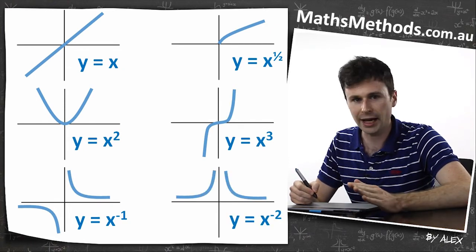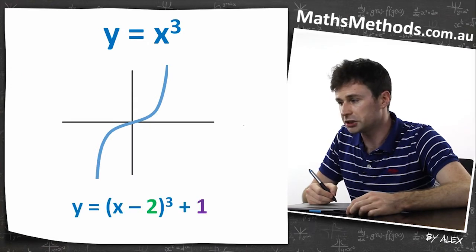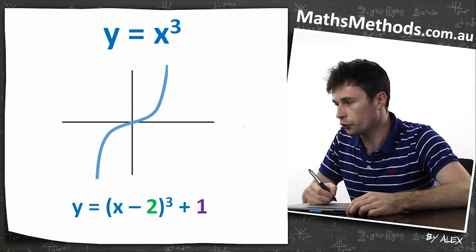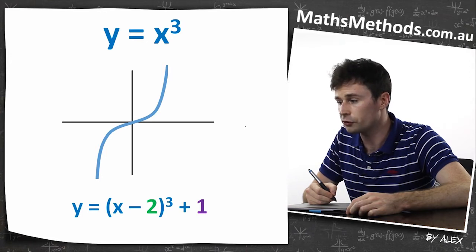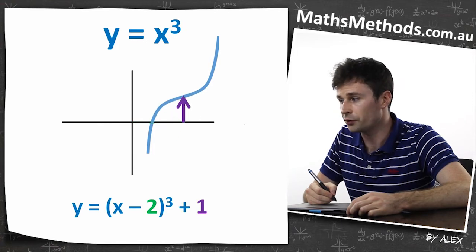So these are all just basic shapes. If you've got y equals x cubed like this one, and you want to change it into y equals (x minus 2) cubed plus one, well all you have to do is plus two on the x-axis and plus one on the y-axis.